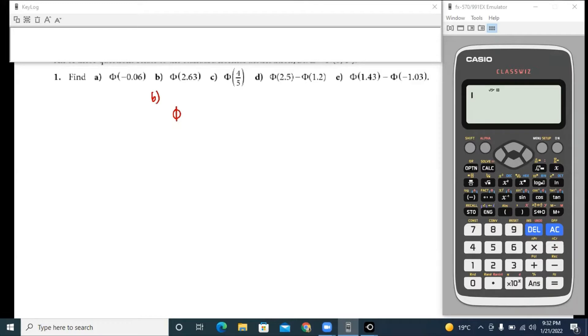In this example, part b, I'm going to do part b first just as an explanation. Phi of 2.63. Now if you are aware of the normal distribution table, the normal distribution curve looks something like this and what you're trying to read is this area.